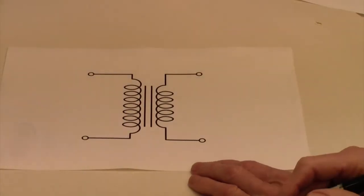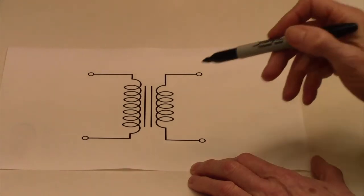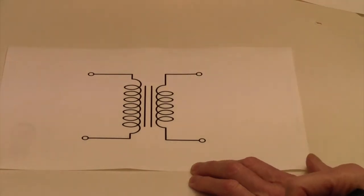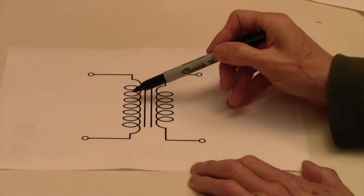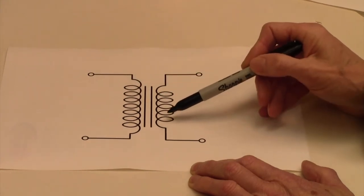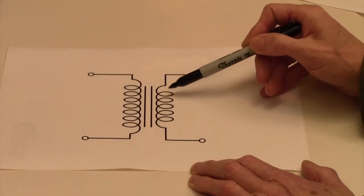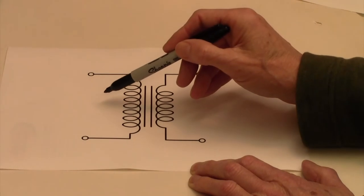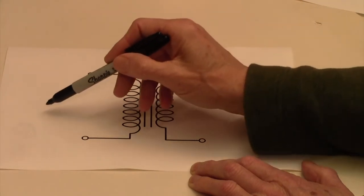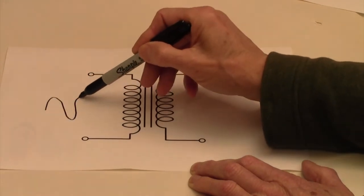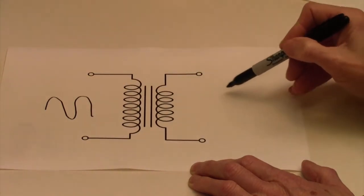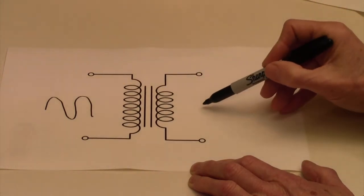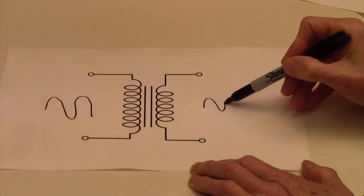This is the circuit symbol for our transformer. So if you see that on a schematic you'll know what it is. Here is our primary winding. Here is just one secondary winding shown. And so our 240 volts AC will be coming in here. And our transformed AC voltage, higher or lower, will be coming out here.